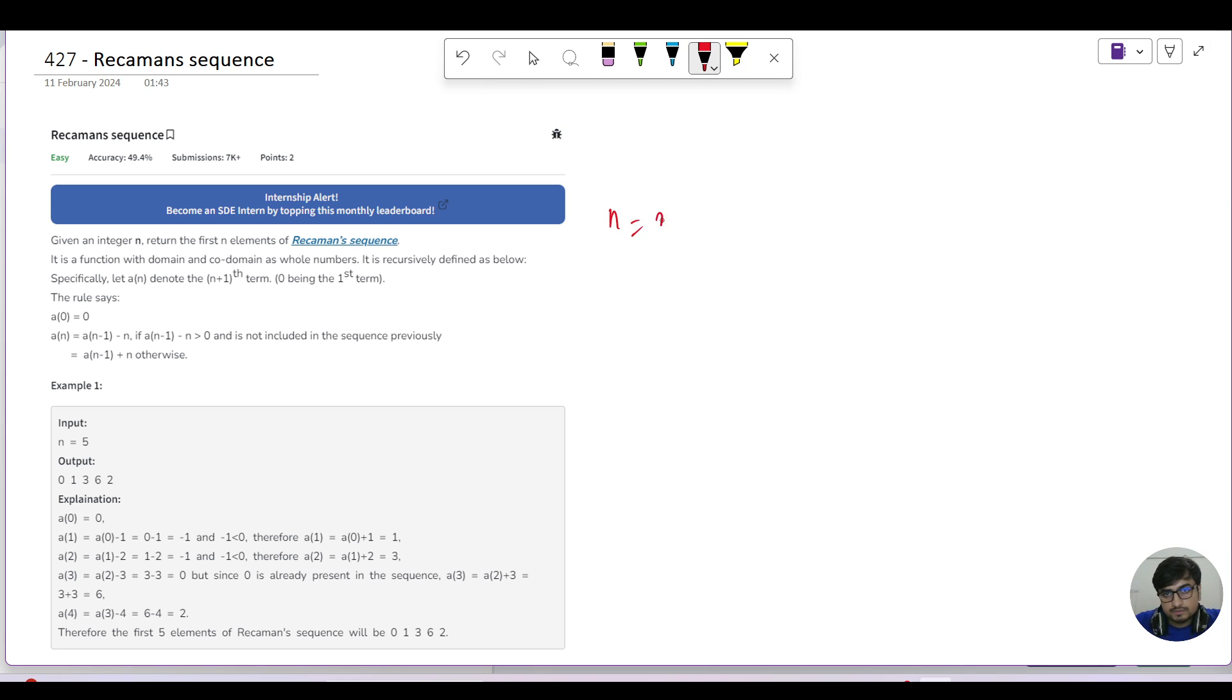Okay, for n equals 5 we have the indexes as 0, 1, 2, 3, and 4. So this is your i, right, and your a[n]. First of all, it says that the first element will always be zero.